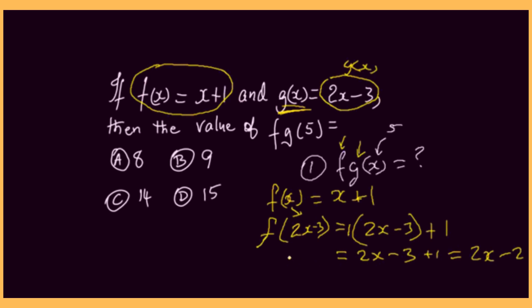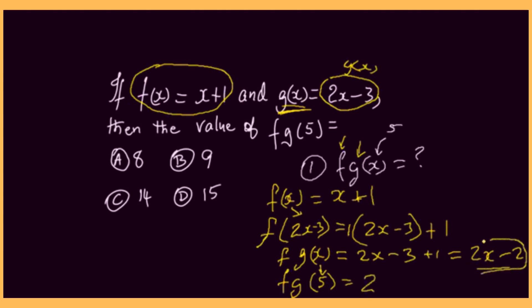So we can clearly see that 2x minus 3 is really g of x. So f of g of x is equal to 2x minus 2. Now remember, we are asked to find f of g of 5. So I replace x with 5, giving us 2 times 5 minus 2. Now 2 fives is 10, and 10 minus 2 gives us 8. So our answer is 8. That's one method.